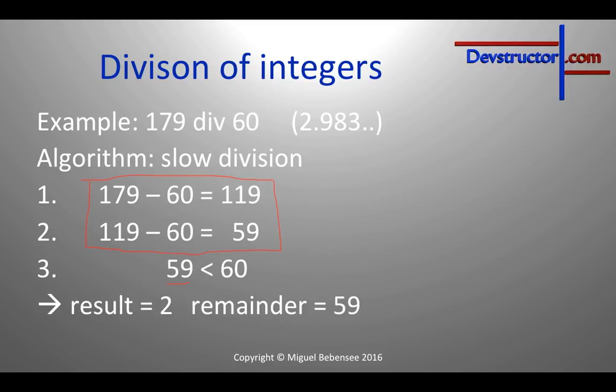Your computer could also use different algorithms depending on what you calculate. In some situations it's actually really simple — like if you do a division by 2, your computer will just do a bit shift of the binary representation of the number, and this is really fast.